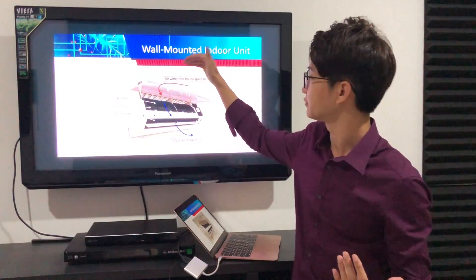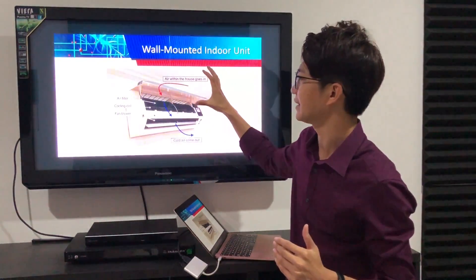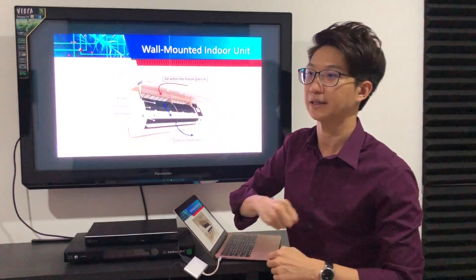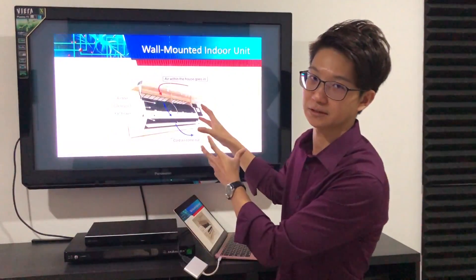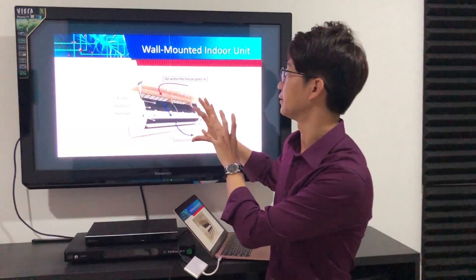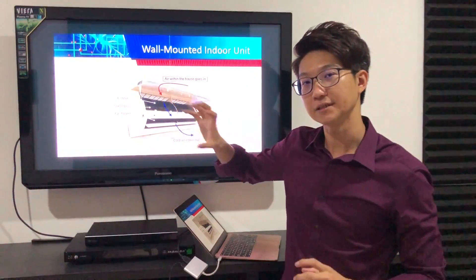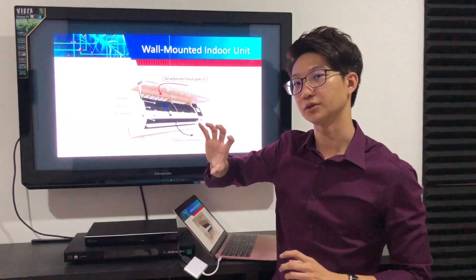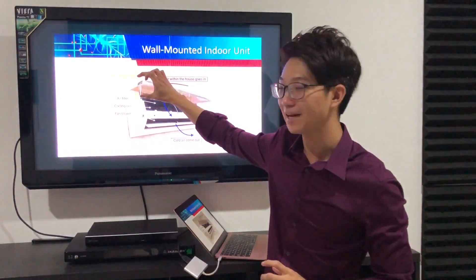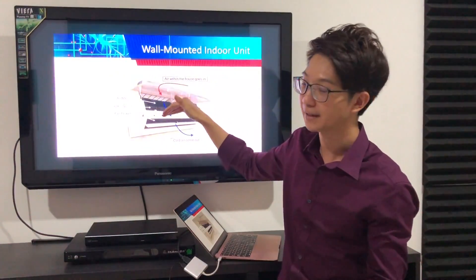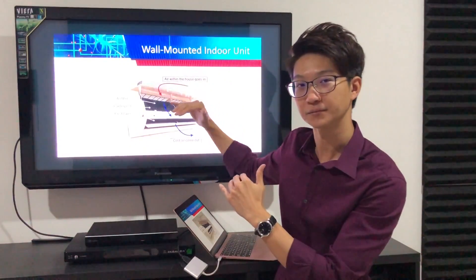Air goes in from the top and comes out from the bottom. There are other form factors — like bottom-in, top-out. This is what a typical wall-mounted unit looks like. The up-and-down positioning is very important. Particularly at the top, you want to leave some gap so you don't choke the return air, and also so you can open the cover.